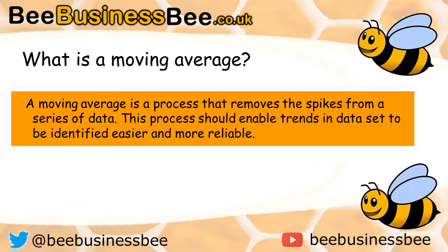A Moving Average is a process that removes the spikes from a series of data. This process enables trends in a data set to be easily identified and become more reliable. In simple terms, if you think about a typical data set, it can be all over the place. Let me show you an example.